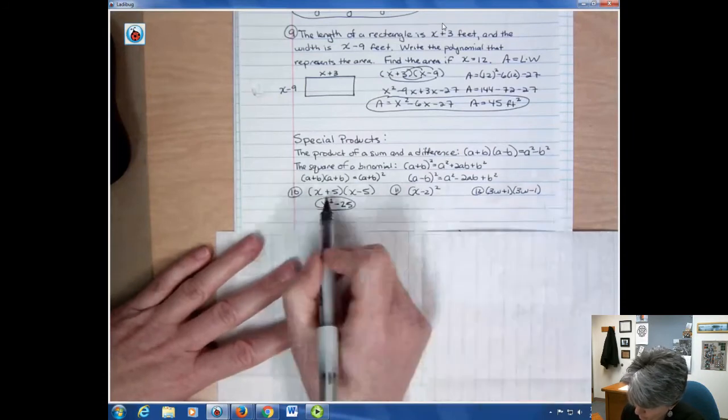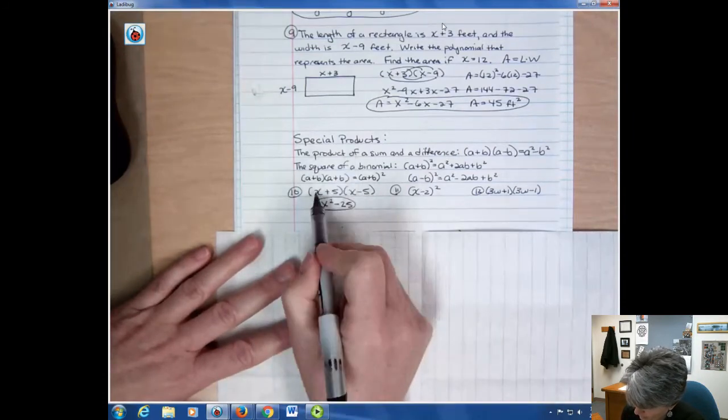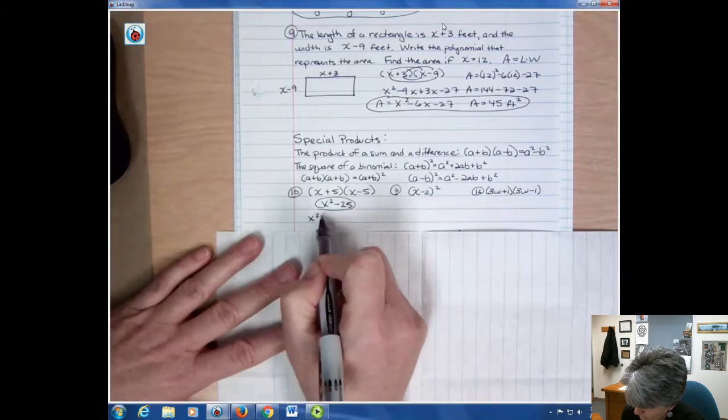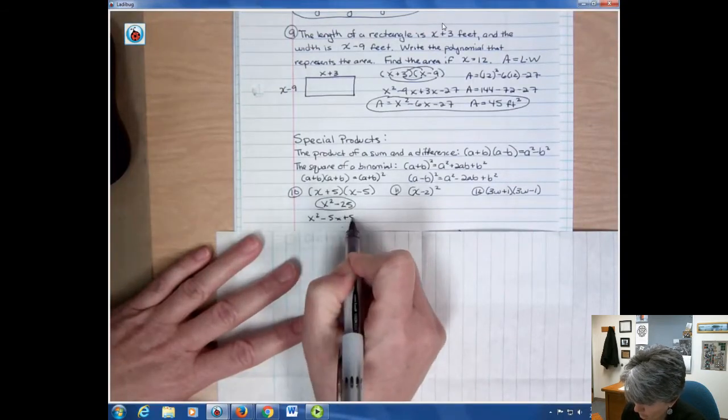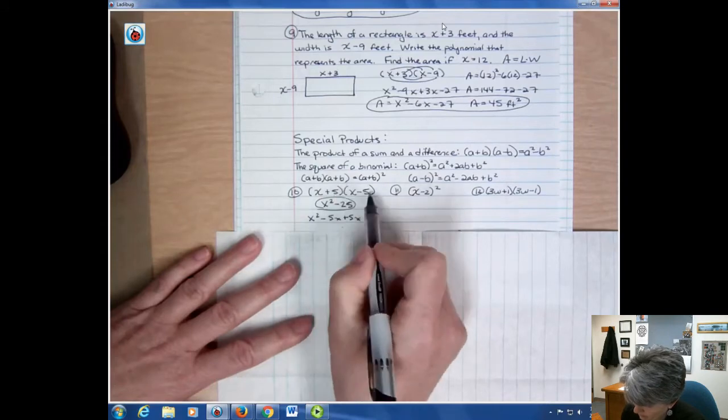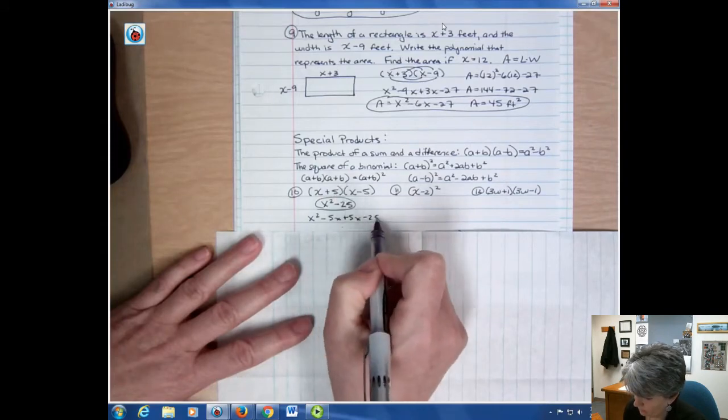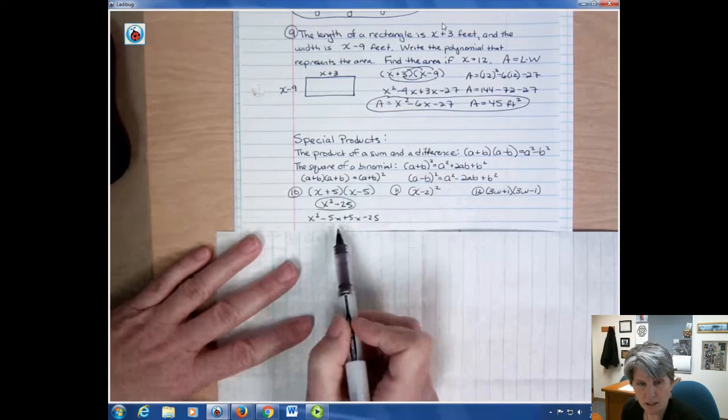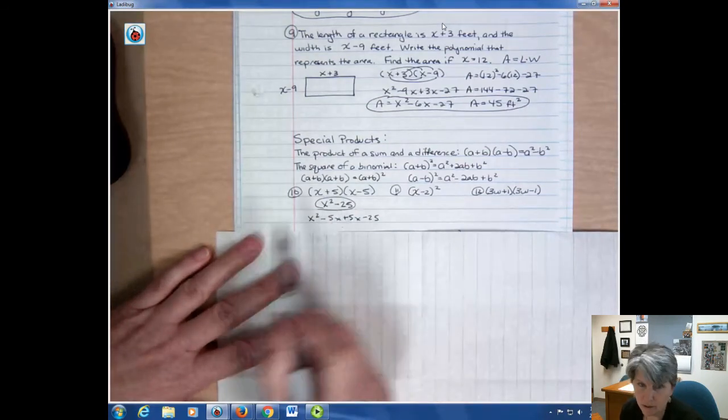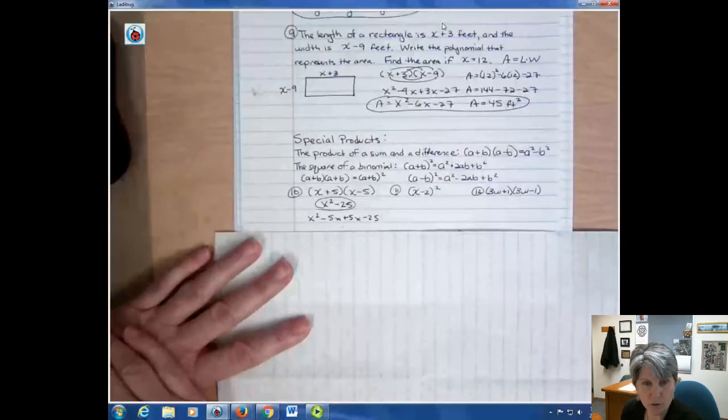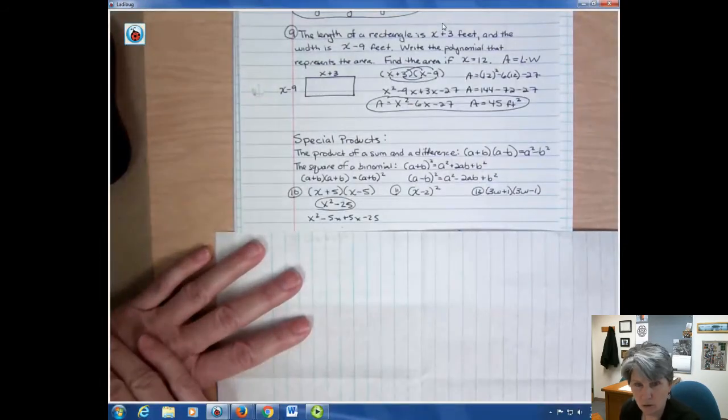If I was to FOIL that though, I would get x times x is x squared, outside is negative 5x, inside positive 5x, and 5 times negative 5 is negative 25. Look what happens to my inside and outside terms. They drop out and that's why I don't have any x in the middle there. So I can use the shortcut or I could FOIL it either way.